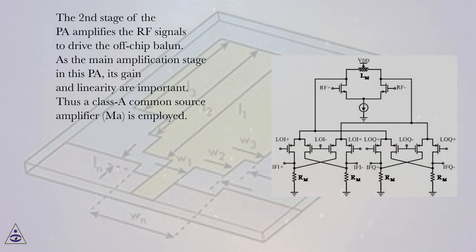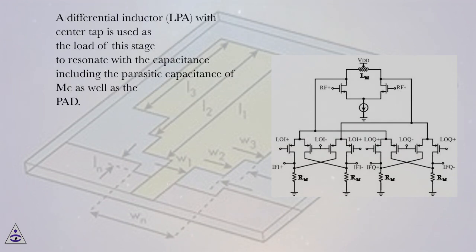The second stage of the PA amplifies the RF signals to drive the off-chip ballon. As the main amplification stage in this PA, its gain and linearity are important. Thus a class A common source amplifier, MA, is employed. A differential inductor, LPA, with center tap is used as the load of this stage to resonate with the capacitance including the parasitic capacitance of MC as well as the pad.